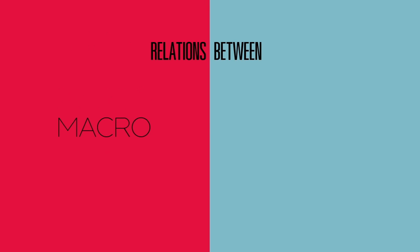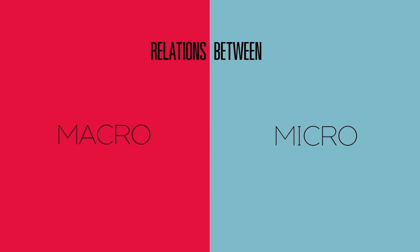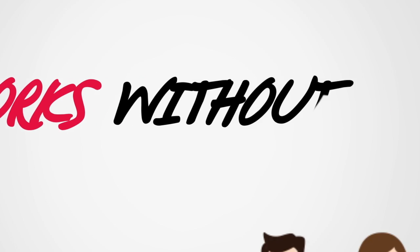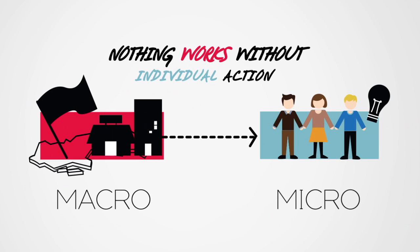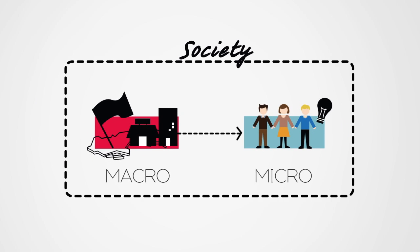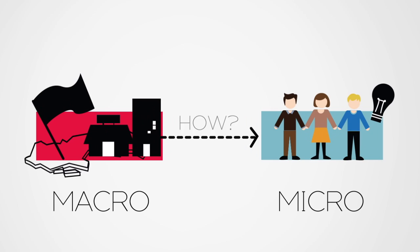Many of the central questions in sociology are related to relations between macro and micro. Social structures and institutions influence how individuals think and behave. However, nothing in the social world works without individual action. After all, the large-scale social formations are basically made of individuals and their social relationships. The society is not a mere sum of individuals, but how do macro facts depend on facts about individuals? This is what sociologists wish to understand.